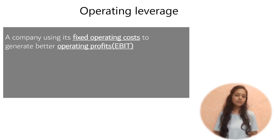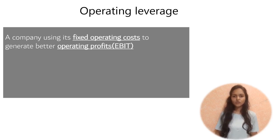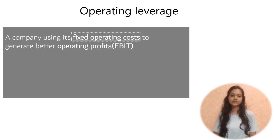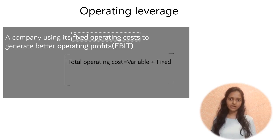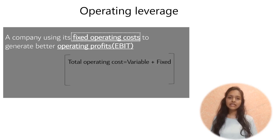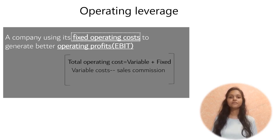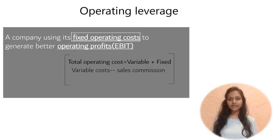Operating profit means earnings before you pay any interest or taxes. Now let me explain what fixed operating cost means. A company's total operating cost consists of both variable and fixed operating costs. Variable operating cost changes as the company's sales change — for example, sales commission. Fixed operating cost, which is related to operating leverage, does not change easily with sales — like rent or salary.